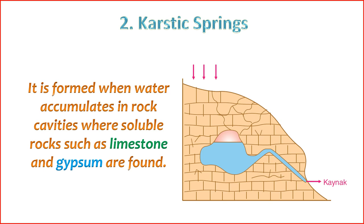4. Subsurface Flow — water in karstic springs may have traveled considerable distances underground before emerging at the spring. The subsurface flow allows water to interact with the soluble rock, acquiring minerals and characteristics from the geological formations. 5. Intermittent Flow — the flow of water from karstic springs can be variable and may exhibit intermittent behavior. Seasonal variations in precipitation and recharge influence the discharge of these springs.